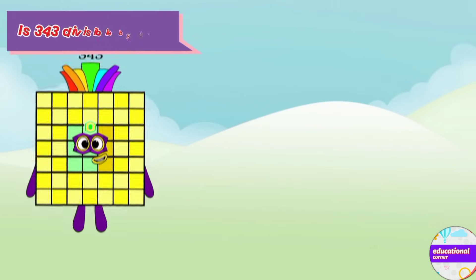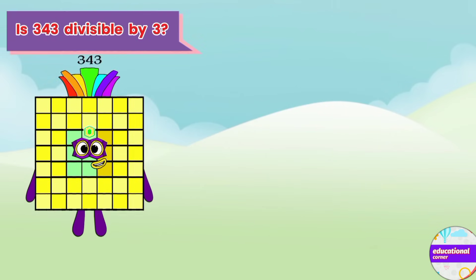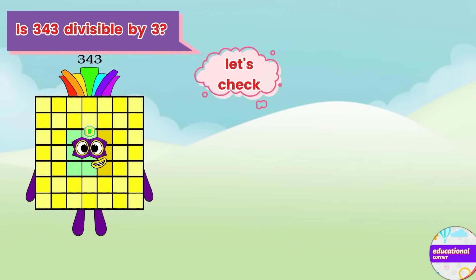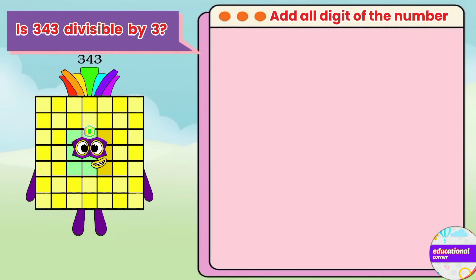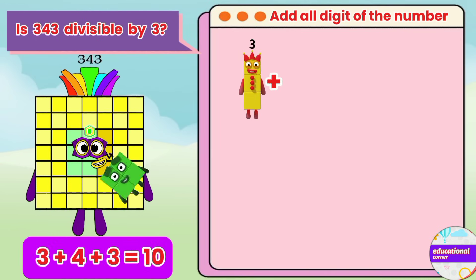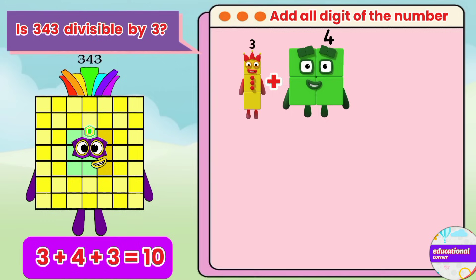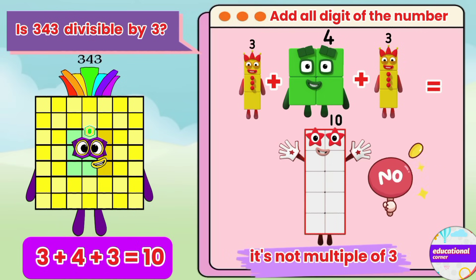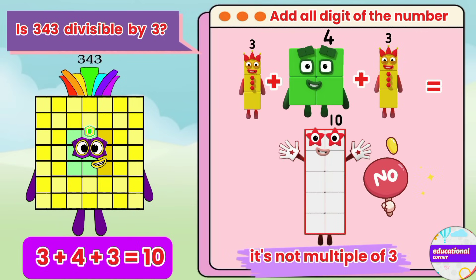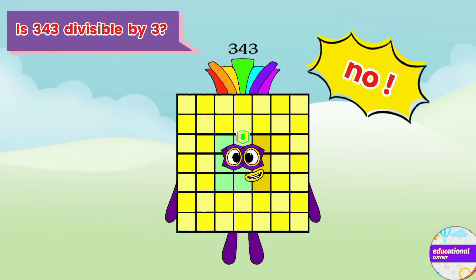Is 343 divisible by 3? Let's check. 3 plus 4 plus 3 equals 10. It's not a multiple of 3. No!